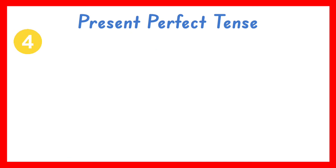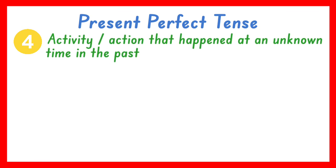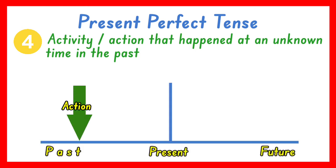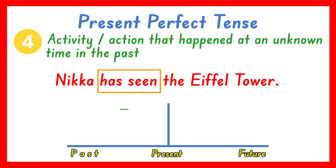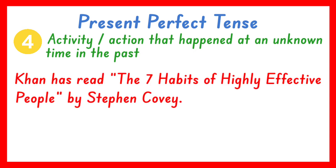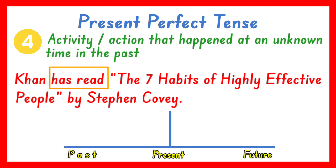Another use of the present perfect tense is to indicate an action that happened in the past where the specific time is unknown or not important. For example: Mika has seen the Eiffel Tower. The present perfect tense is has seen; it only tells that Mika has visited the Eiffel Tower, but the exact time is not stated because it may not be important. Another one: Can has read The Seven Habits of Highly Effective People by Stephen Covey. The verb is has read; it indicates that Can was able to read the book sometime in the past, but when exactly it happened is not known.